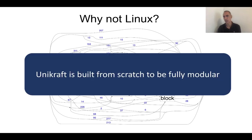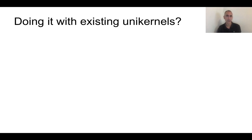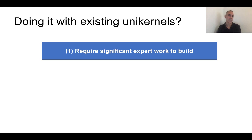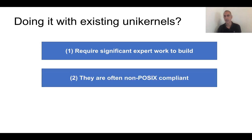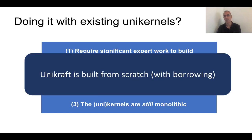Instead, Unikraft is built from scratch to be fully modular. Here are two graphs — one for a Hello World Unikraft application and one for Nginx — and you can see they're much simpler. Couldn't you use existing unikernel projects? The problem is that many of them require significant expert work to build, many are often non-POSIX-compliant — so if you want to take SQLite for a spin, maybe it's not even supported — and their kernel portion, while still small, is still monolithic and not easy to take apart.